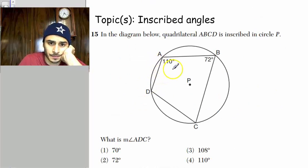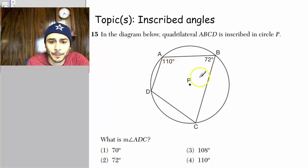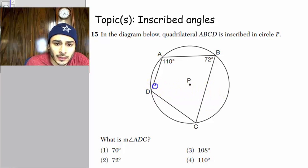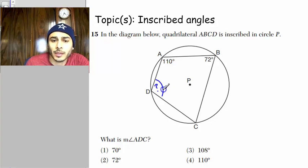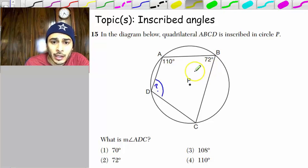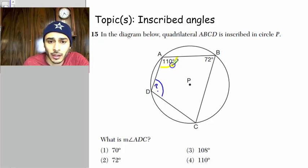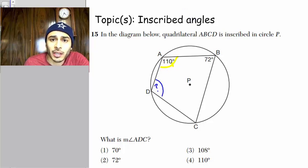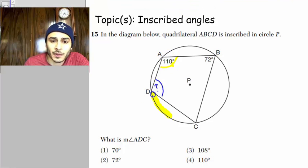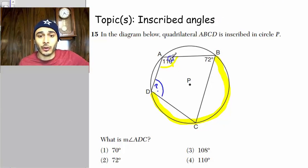Okay, number 15. In the diagram below quadrilateral ABCD is inscribed in circle P. You need to know your inscribed angles for this one. And they want the measure of angle ADC. So let's give it to them. It's going to take a couple of steps to get there, however. So first, let's begin with inscribed angles. So here we have angle A. I'm going to start with angle A. Angle A is 110. Now, since we're given angle A, I could use that angle to find the measurement of this arc. Sometimes you just got to start somewhere and see where it leads you.